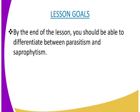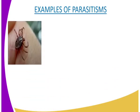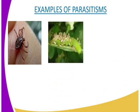Let us have some diagrammatic representation to show the parasite and the host. In our first diagram, you can see we have got the tick. In this case, our tick will be the parasite, while the place where it is landing on is known as the host. In parasitism, the parasite does not necessarily kill the host.